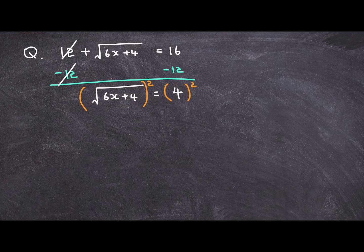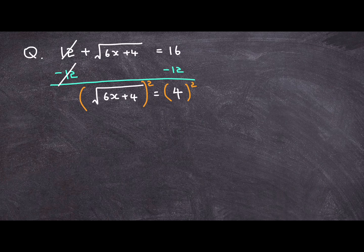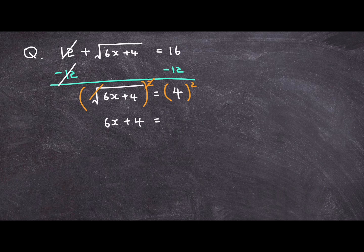So if you do that, you'll be able to safely remove this square root sign and say that 6x plus 4 is equal to 4 squared or 16.